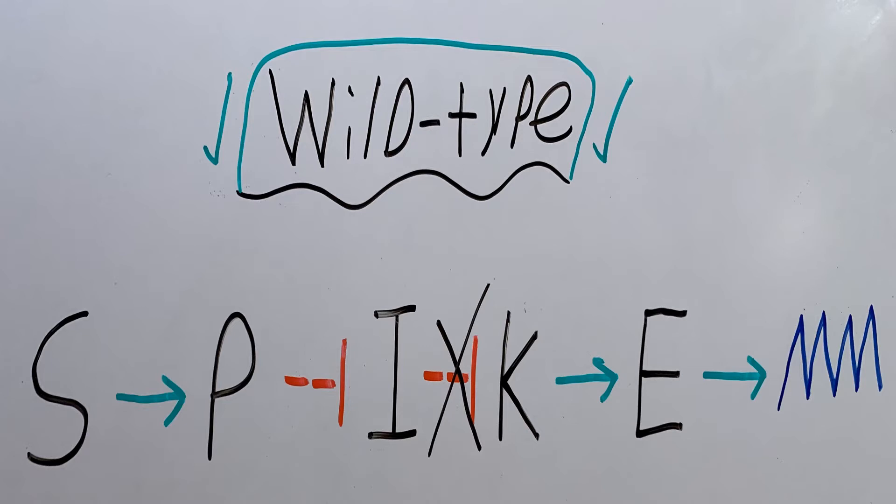Wild type means that there's no mutation stemming from the original developmental network. So S is able to promote P, which then goes on to block I. But because I is blocked, I can't block K, which allows K to promote E. And if E is promoted, then it will lead to the formation of spikes. So wild type works.